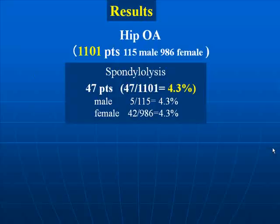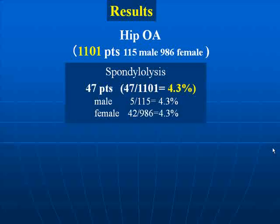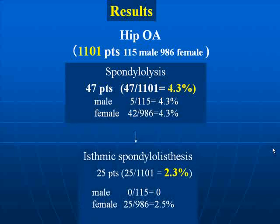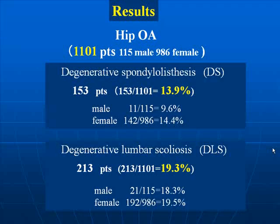Results: Of the total 1,101 cases, spondylolysis was present in 47, giving an incidence of 4.3%. The incidence was equal at 4.3% in both genders. Of these, isthmic spondylolisthesis was noted in 25 cases for an incidence of 2.3%. Degenerative spondylolisthesis was found in 153 cases for an incidence of 13.9%, while degenerative scoliosis was present in 213 cases for an incidence of 19.3%.